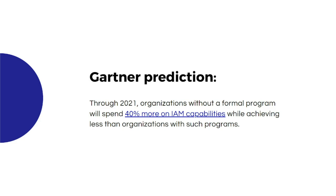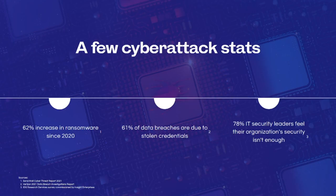2021 has seen a crazy uptick in cybersecurity attacks and compromises. Organizations that were not digital-first pre-pandemic have been forced to become digital-first — they had to reinvent themselves, create new identities, use new applications. We've seen a crazy uptick in spending on identity management capabilities. One main reason is empowering your users to go remote; the next obvious reason is cybersecurity — a 62% increase in ransomware since 2022.